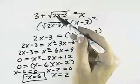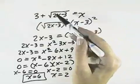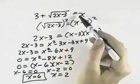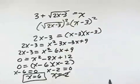When we try 2, 2 times 2 is 4, minus 3 is 1, square root of 1 is 1, plus 3 is 4. It's not equal to 2. So that's not a solution. So x equals 6 would be the solution to this equation.